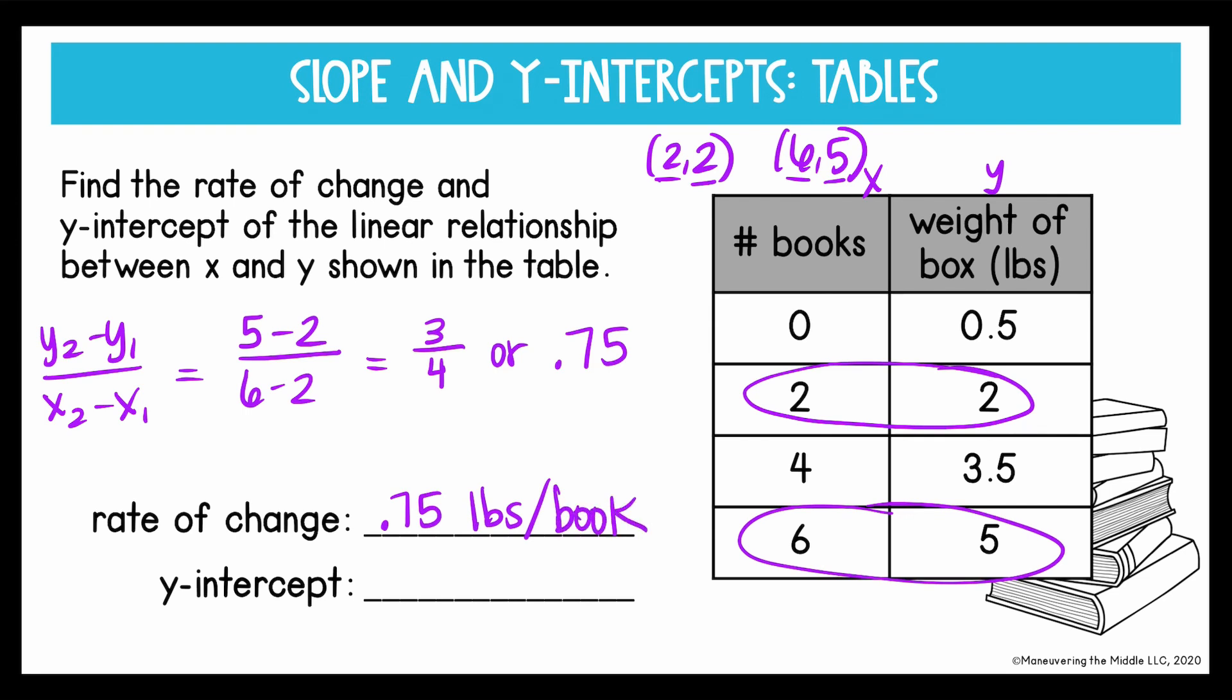And then my y-intercept, again, is the value of y whenever x equals zero. So looking for where x is zero, the y-intercept is 5 tenths.